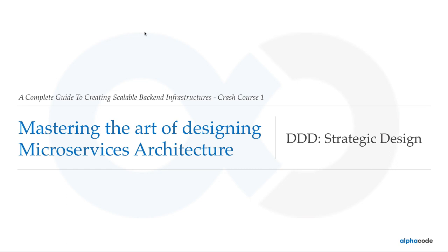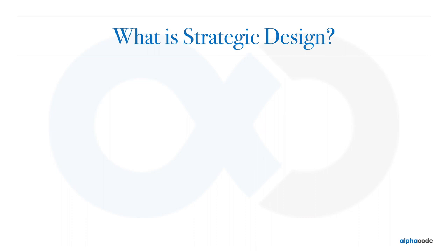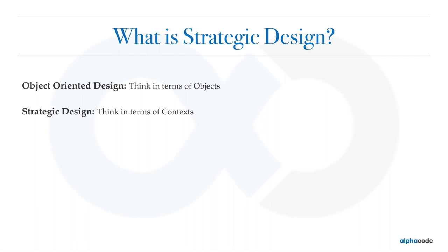Hey, what's up guys, Anshul here from Alpha Code. We are in our second lecture of domain-driven design, and today we will be talking about strategic design. In this crash course series we are in the first part, which is domain-driven design. The object-oriented paradigm teaches you to think in terms of objects, and strategic design or domain-driven design is also called object-oriented design done right.